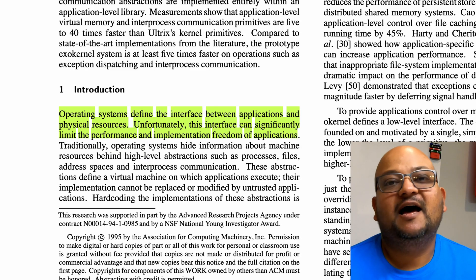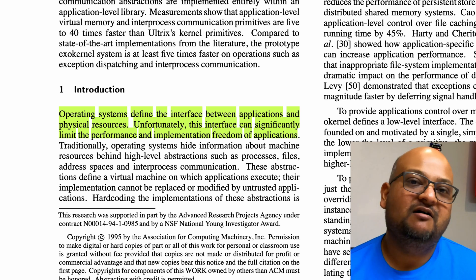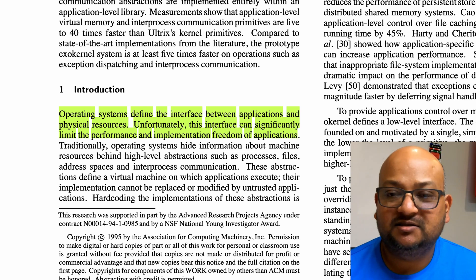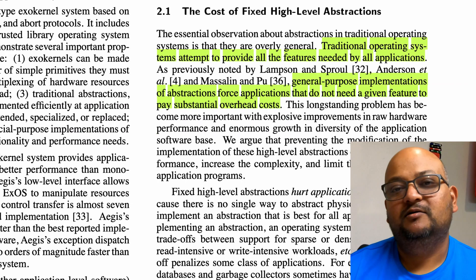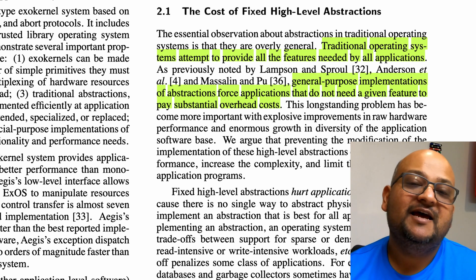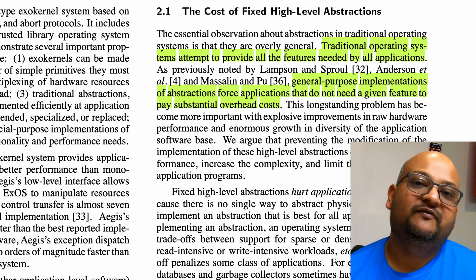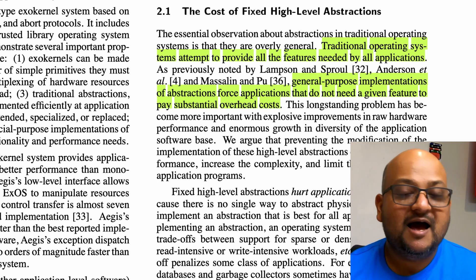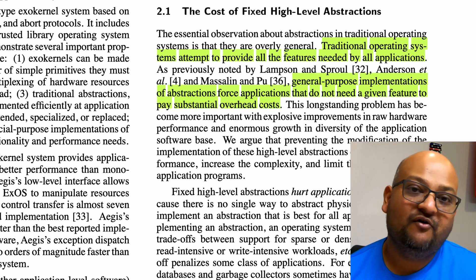This paper argues that the current traditional way in which operating system abstractions are organized is not the best way to go about it. It is inflexible and applications pay a huge performance penalty in using these abstractions. Most current operating systems like Unix and its variants try to provide very high-level general purpose abstractions that meet as many use cases as possible. In doing so, they make these abstractions very heavyweight, and they come with a big performance penalty.